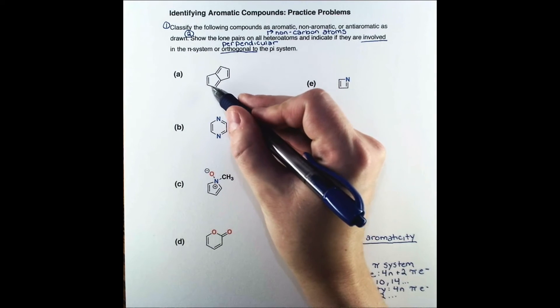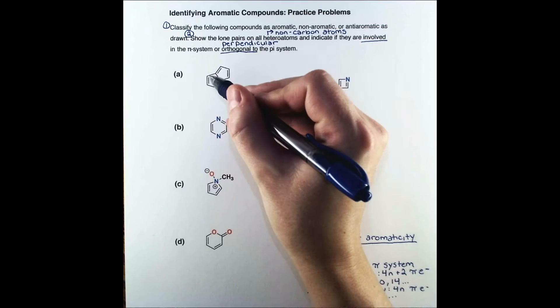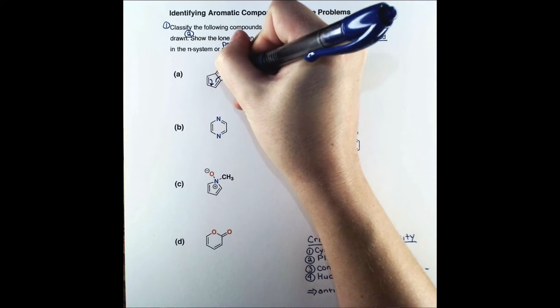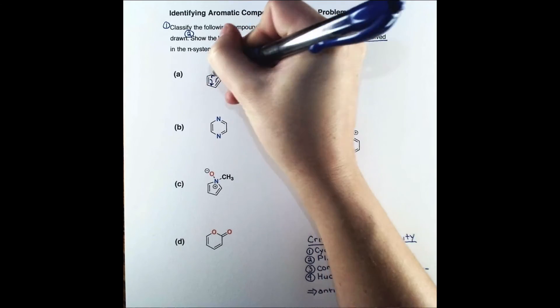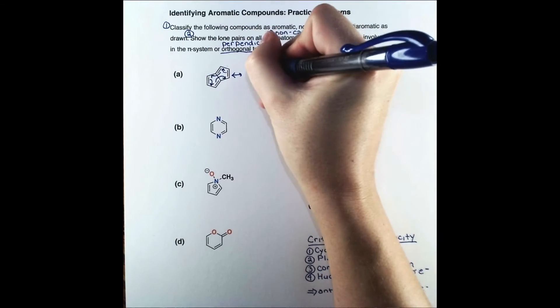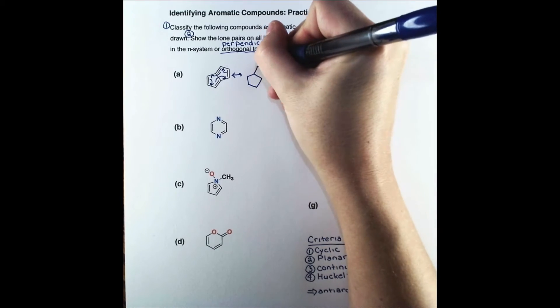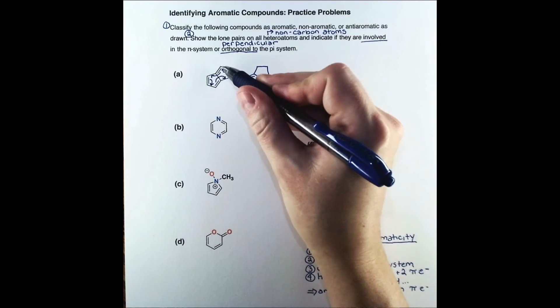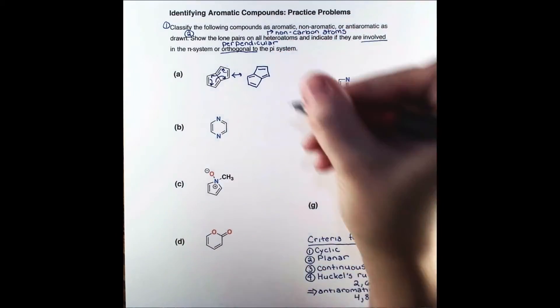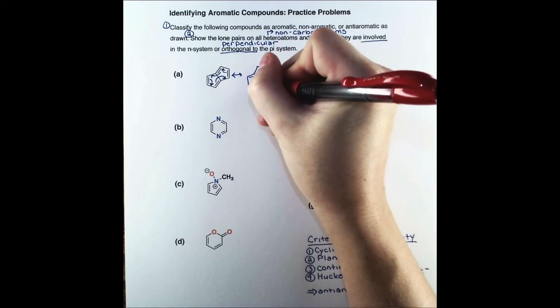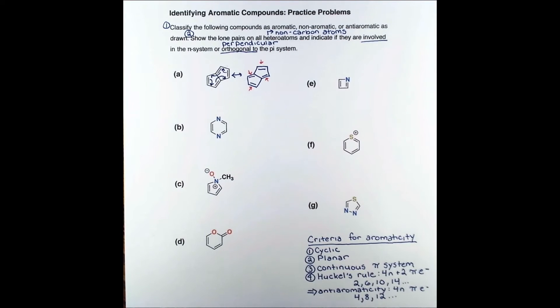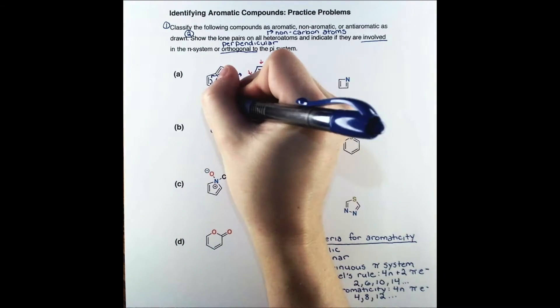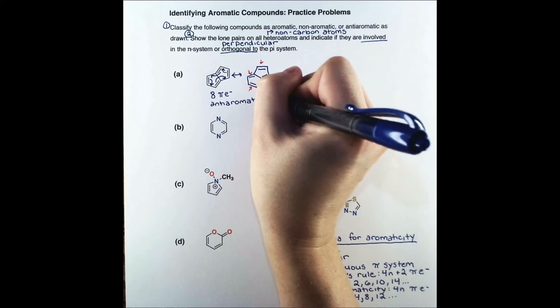In problem A, we have alternating single and double bonds, and we can see this pattern continues across two rings. We can draw a resonance form to show electron delocalization over the bicyclic compound. Remember, each of our representations is an average of the actual structure. Let's count pi electrons. Each double bond is made up of two electrons, so we have 2, 4, 6, 8 pi electrons in this system, which makes it anti-aromatic.